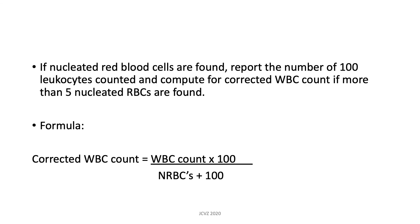Also, if you notice a lot of nucleated red blood cells on your smear, you would need to report their number per 100 leukocytes counted and compute the corrected WBC count if more than 5 nucleated RBCs are found. The formula for the corrected WBC count is: WBC count × 100 ÷ (nucleated RBCs + 100).